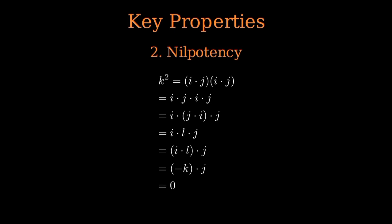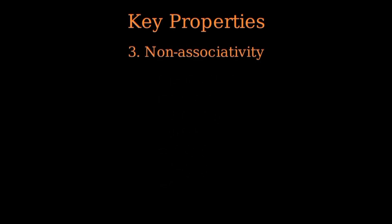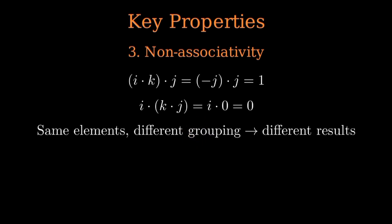So finally, there's non-associativity. That means grouping matters. For example, if you group as I times K and then times J, that gives negative J times J, which equals one. But if you group it as I times the result of K times J, that's I times zero, which is zero. Same elements, different groupings, completely different outcomes.